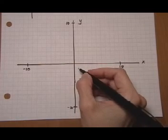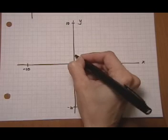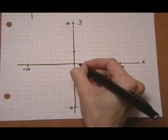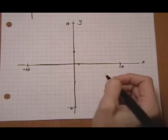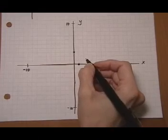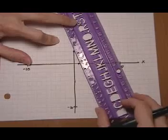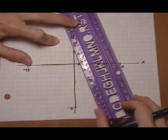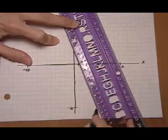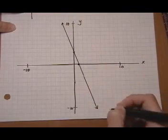So for the first equation the first point or ordered pair is 0, 3. 0 for x, 3 for y. The next point was 1, 0. Let's go ahead and get our graph first otherwise I'm going to forget what point goes with what equation. So these points go together. I'll make a nice long line so I've got plenty of room to see where the intersection happens. Arrows at both ends.